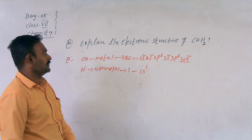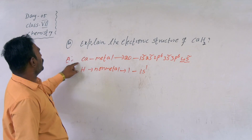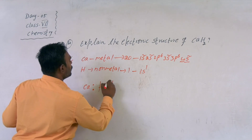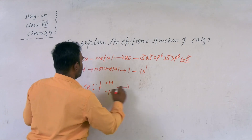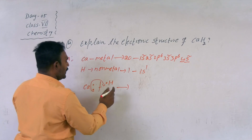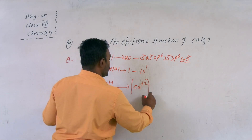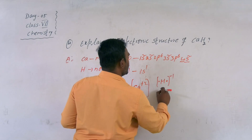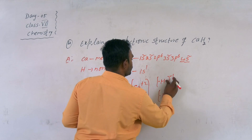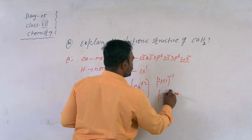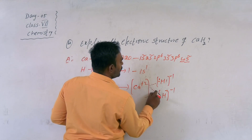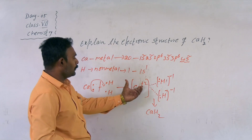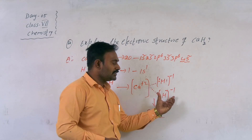Hydrogen cannot achieve octet configuration; it can only achieve the helium duplet configuration, so hydrogen is ready to gain 1 electron. Calcium is ready to lose 2 electrons. Calcium has 2 valence electrons and each hydrogen has 1 valence electron. Calcium donates 2 electrons to 2 hydrogen atoms. As a result, calcium acquires a dipositive charge and each hydrogen atom acquires a negative charge. An electrostatic force of attraction is present, and the formula is CaH₂, with total positive charge of 2 units and total negative charge of 2 units.